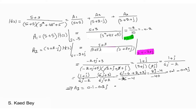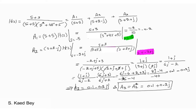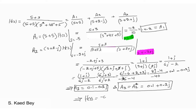Remember, coefficients A2 and A3 are both conjugates of each other, so you only need to find either coefficient A2 or coefficient A3. Now we have the coefficients A1, A2, and A3. We can rewrite the fraction H of S as a sum of simpler fractions.